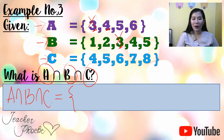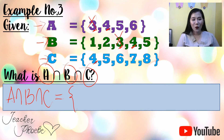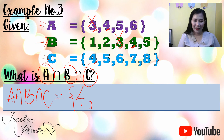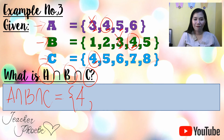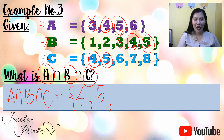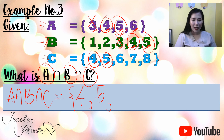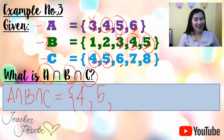Next, check 4: does it have a match in B? Yes. Does it have a match in C? Yes. Since it appears in all three sets — A, B, and C — it is included as an answer. Next, check 5: does it have a match in B? Yes. Does it have a match in C? Yes — so 5 is also an answer. Next, check 6: does it have a match in B? No — so 6 is not an answer even though it appears in C.